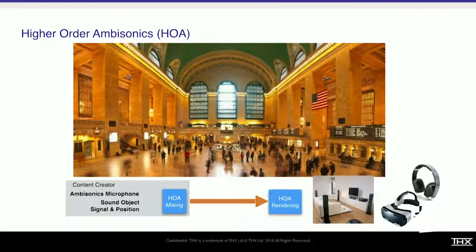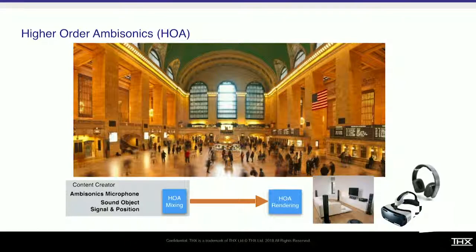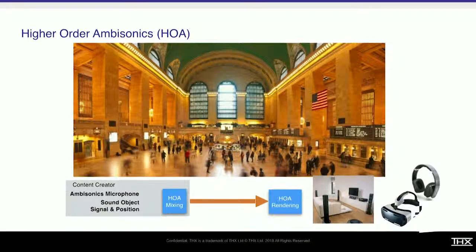It's much more flexible to have one piece of content production in your workflow. You don't need a separate 5.1 mix, a 7.1 mix, and a binaural mix. You can do one ambisonics mix, monitor on anything, and have one content delivery workflow.